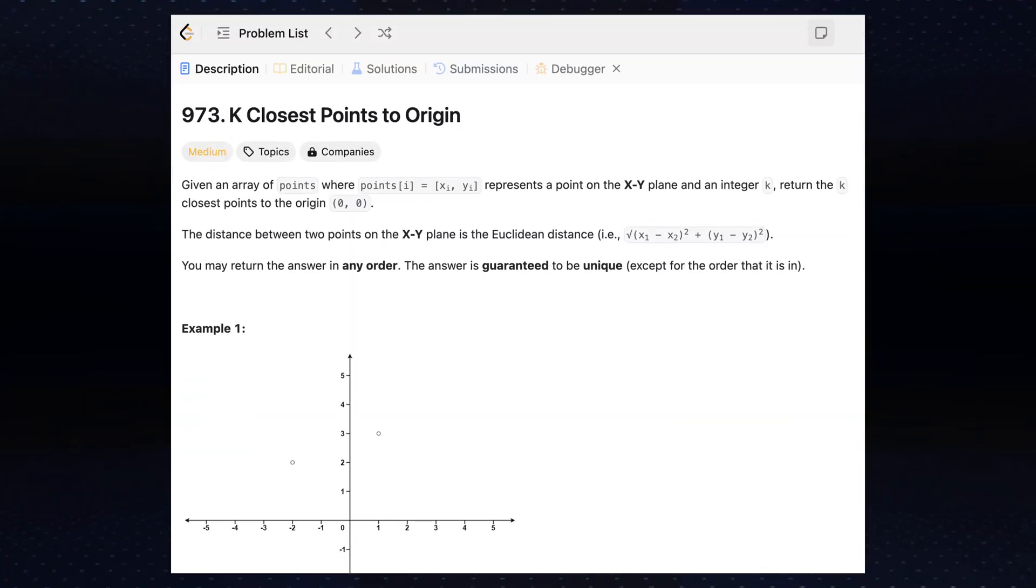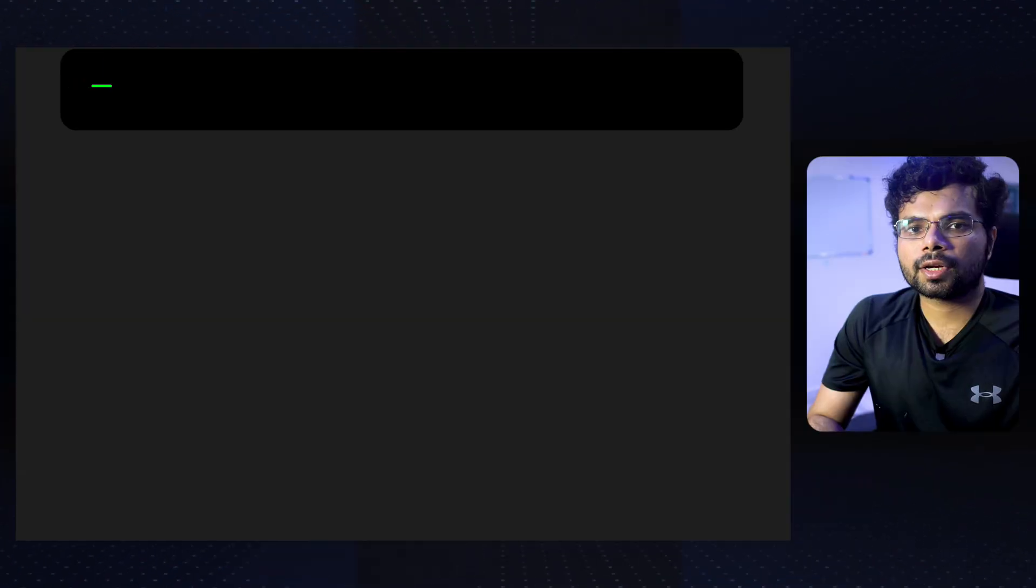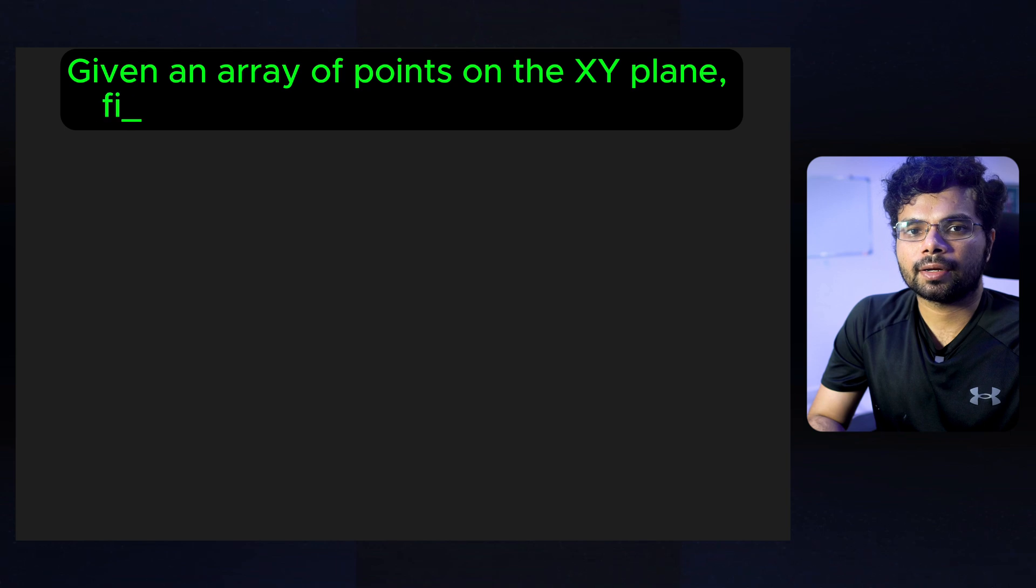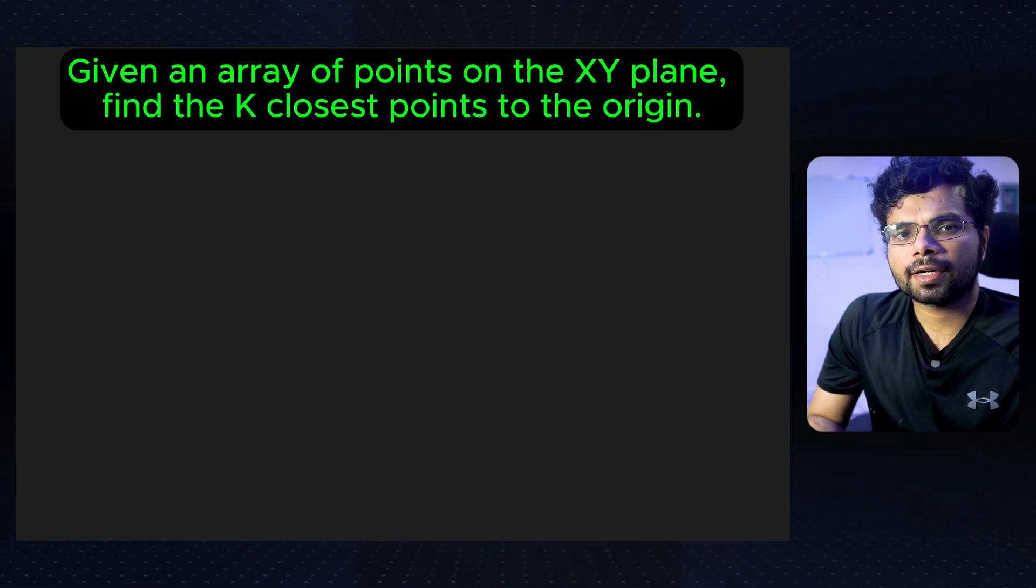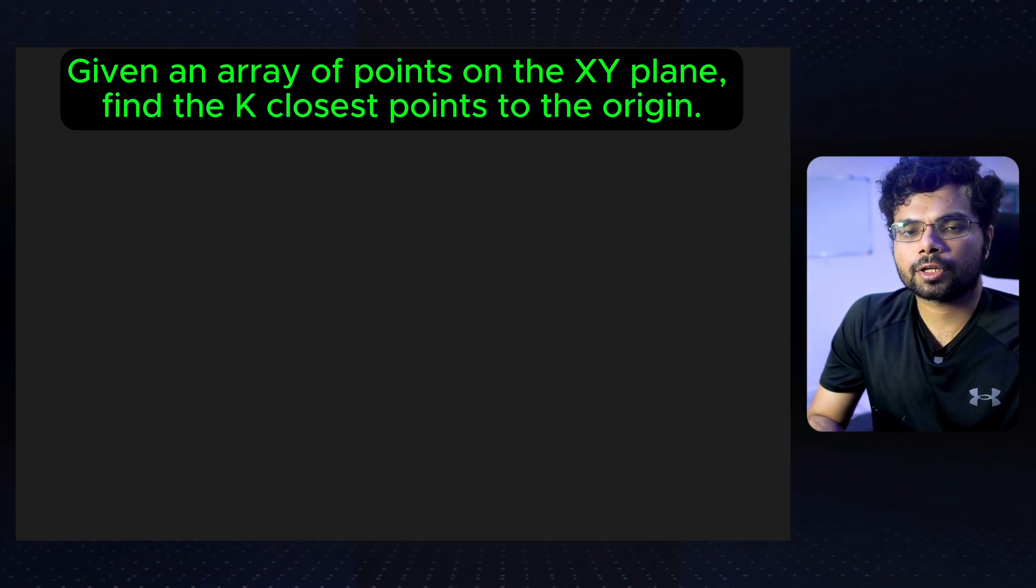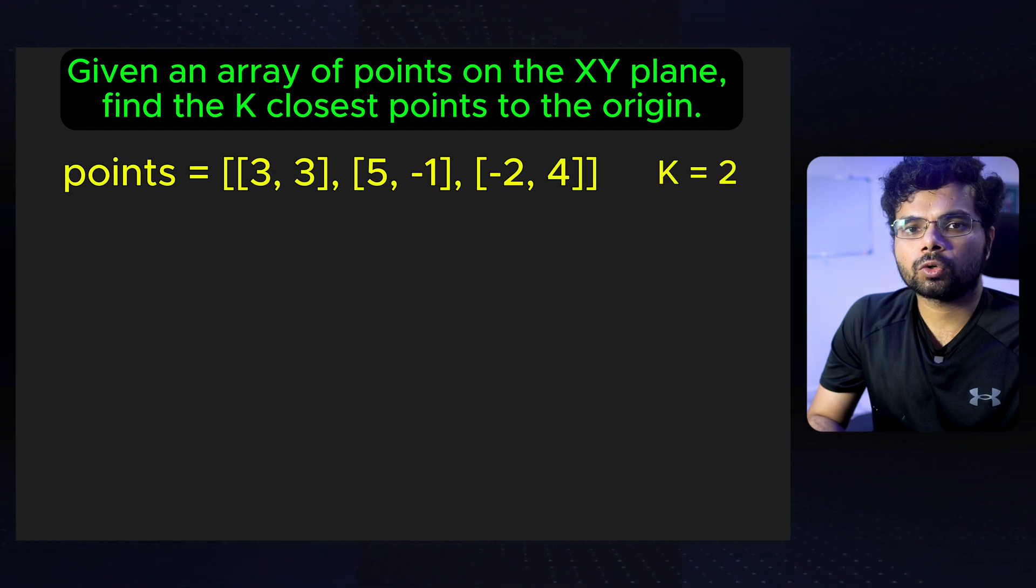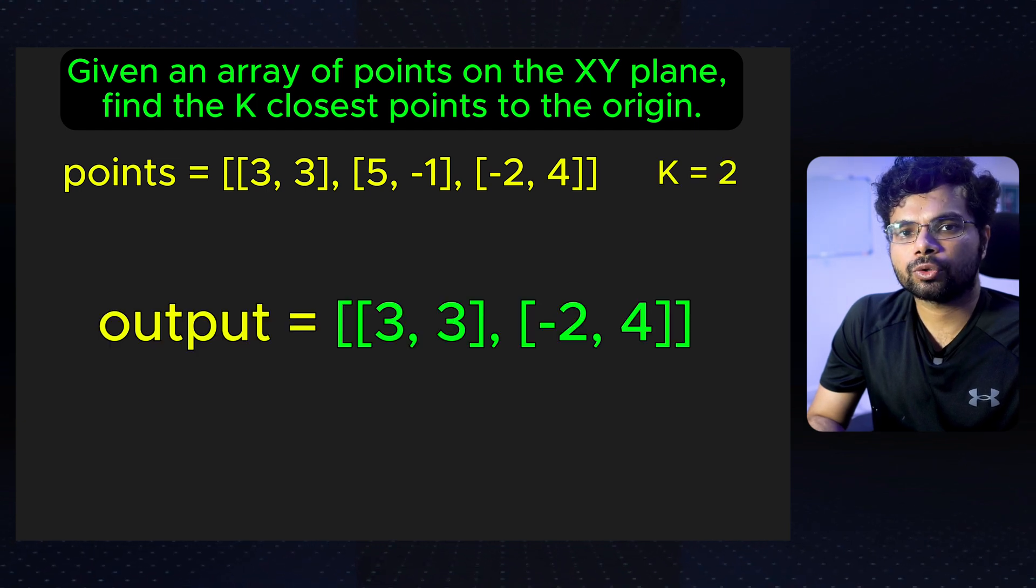Next problem is LeetCode 973, k closest points to origin. You are given an array of points on the xy plane and an integer k. The goal is to find the k closest points to the origin. For example, if the input points are and k is 2, the two closest points are 3,3 and -2,4.